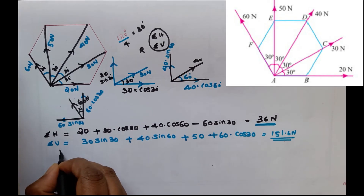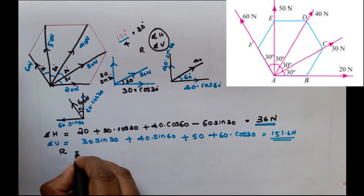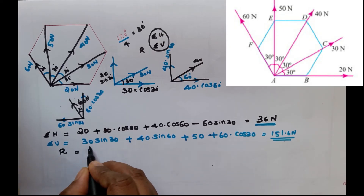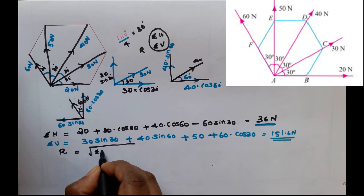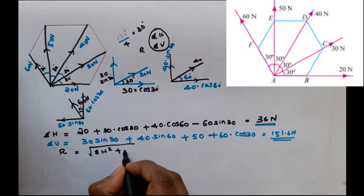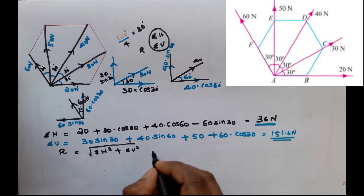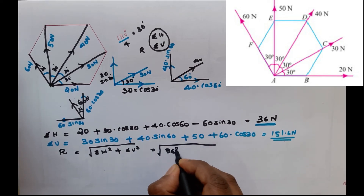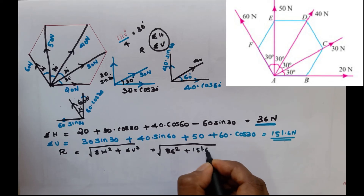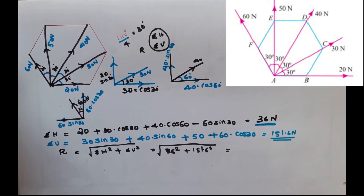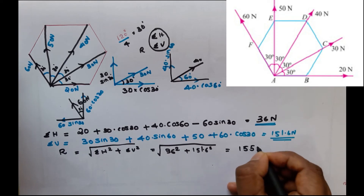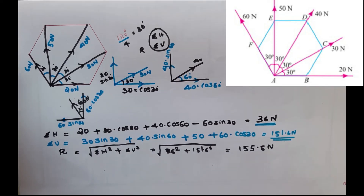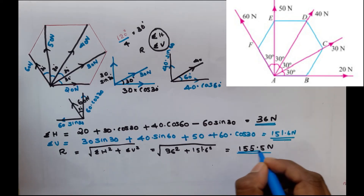The resultant R equals the square root of sigma H squared plus sigma V squared — that is, the square root of 36² plus 151.6². The resultant R equals 155.5 Newton. That is the first part: the resultant magnitude.